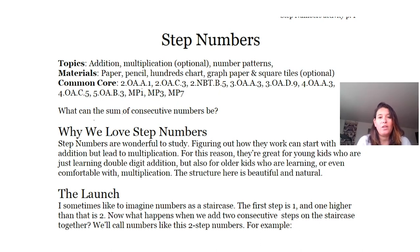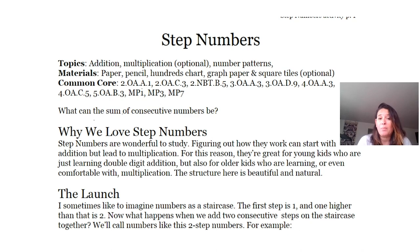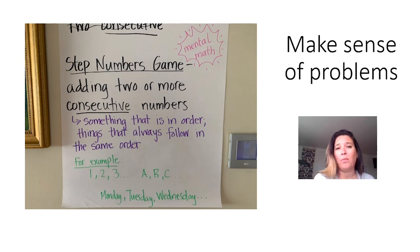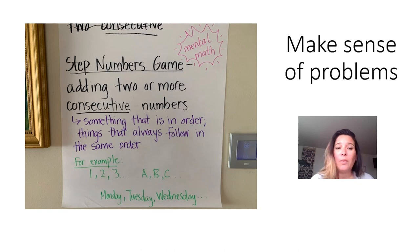Step numbers are all about using mental math and addition. Step numbers are a way to describe numbers that are consecutive. You have to know the meaning of the word 'consecutive,' and here is where our first mathematical practice comes in — making sense of problems. When we read the directions of something, we don't always know what to do right away. In this case, you might not know what 'consecutive' means.